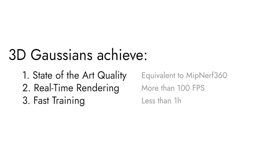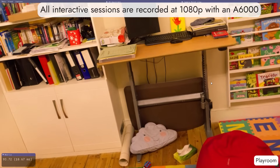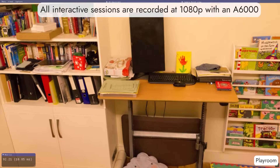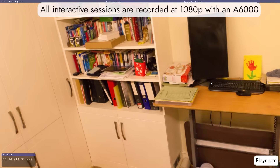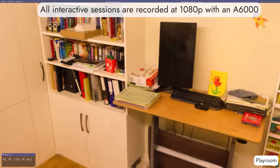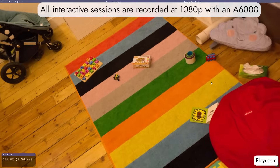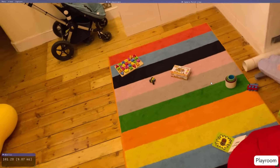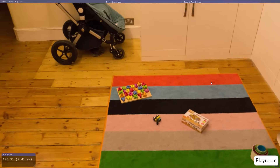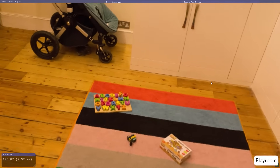In summary, 3D Gaussians are the first to achieve state-of-the-art quality, real-time rendering, and fast training — all at the same time. Here we show some interactive sessions recorded in our lab with an A6000 GPU. Please note that real-time rendering can also be achieved with less powerful hardware.